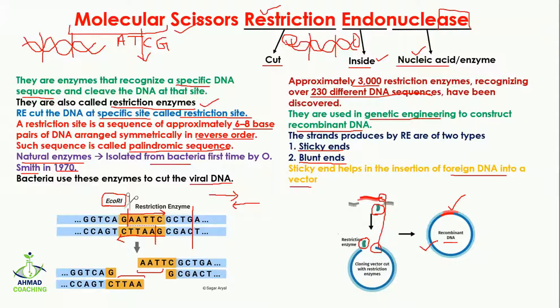In recombinant DNA, one DNA comes from one source while the second DNA comes from another source. This is what restriction enzymes are and how they help in recombinant DNA technology or genetic engineering. That was all about our lesson on molecular scissors and restriction endonucleases. If you have any questions, ask in the comment section. If you enjoyed this video, like it and subscribe to my channel.